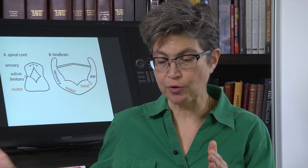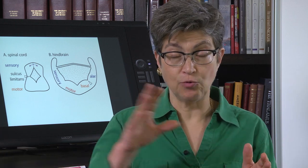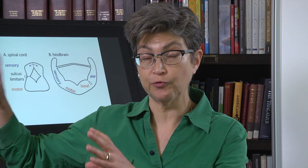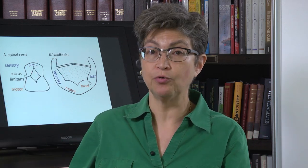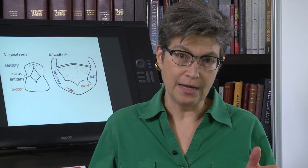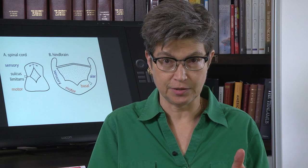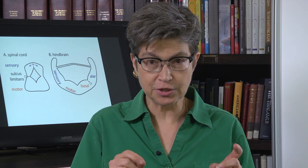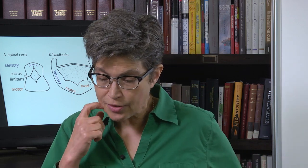We're going to move progressively inside the nervous system. We've been talking about the peripheral targets of every cranial nerve, so you understand the peripheral components of every cranial nerve. Now we're going to look at where they come out of the nervous system.